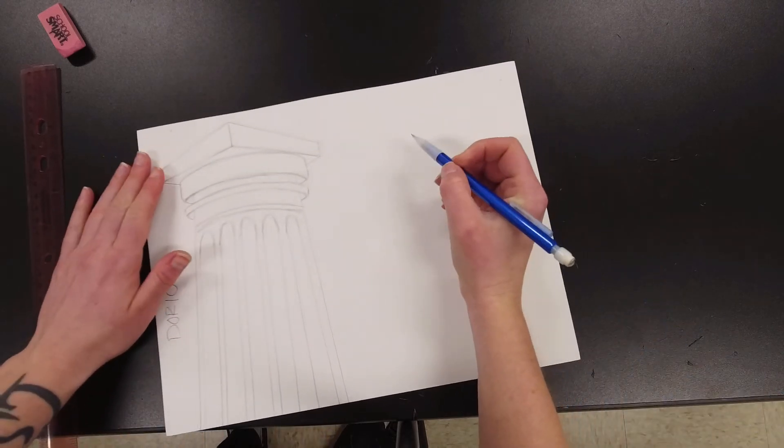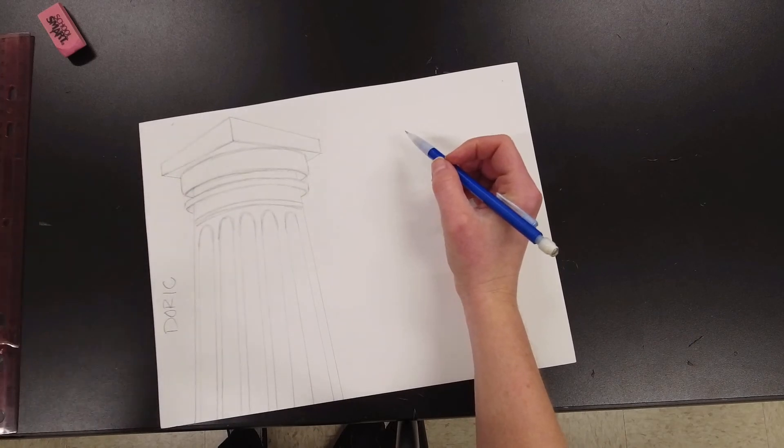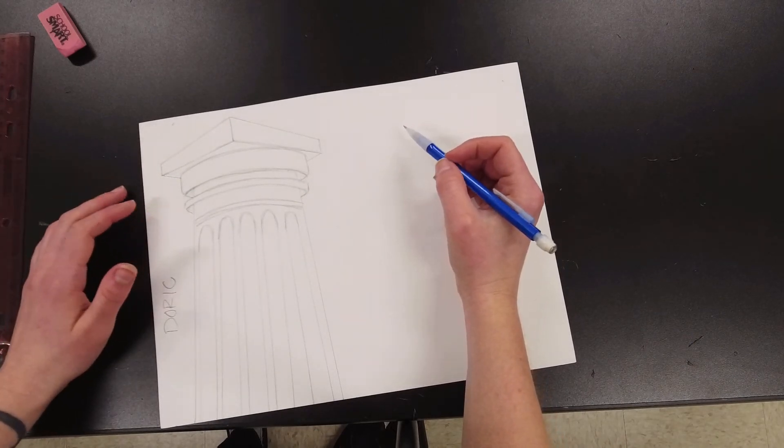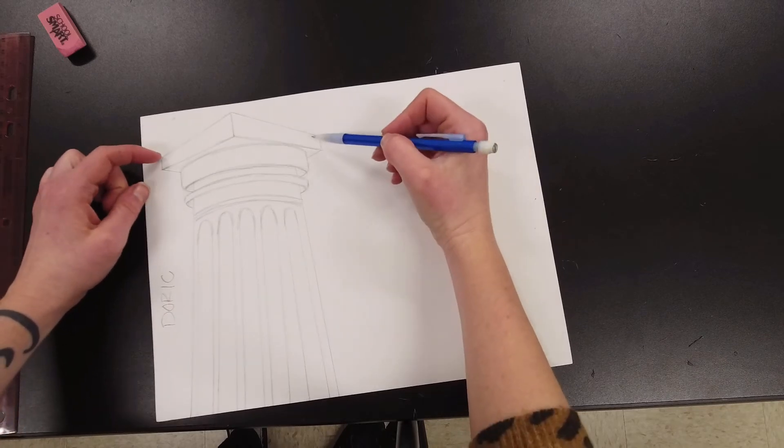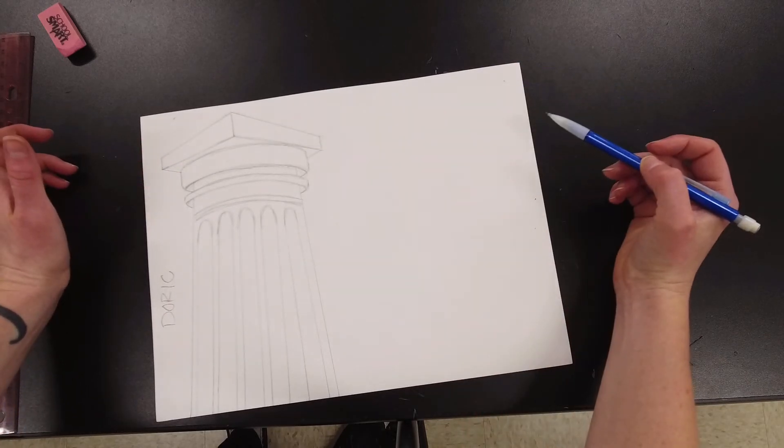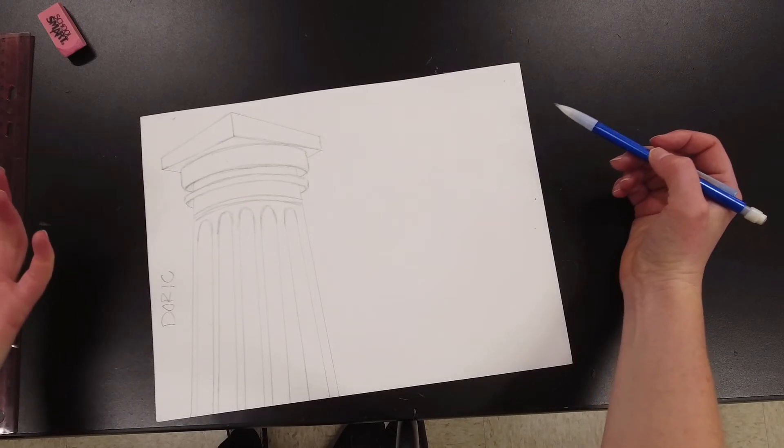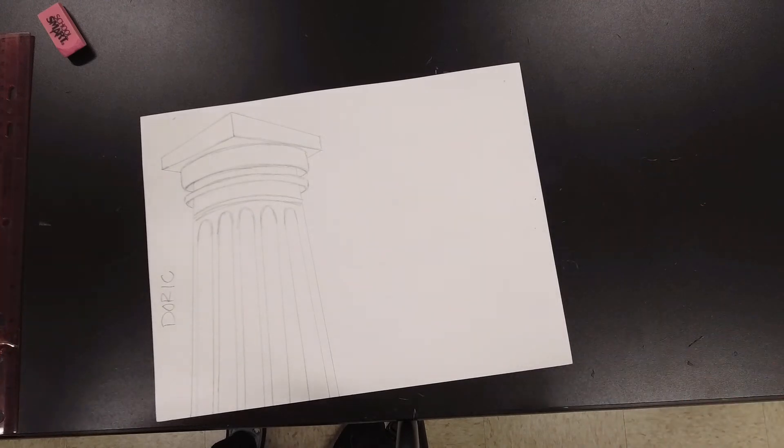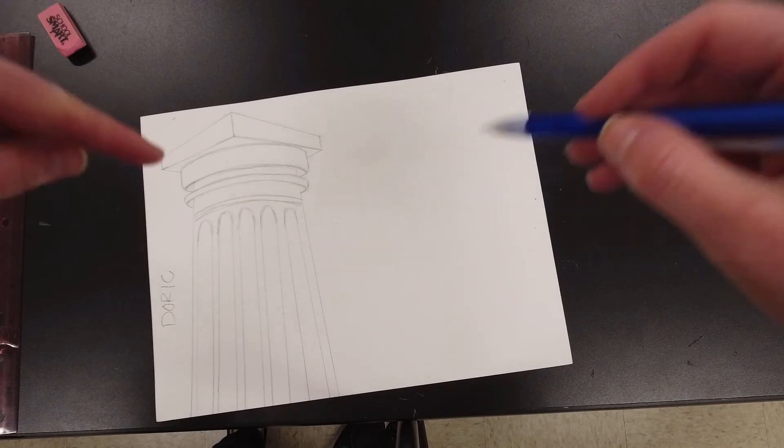And then on this side I'm going to start on an ionic example. The ionic examples can start several different ways. But the main thing is I want to make sure that my ionic one had those sort of little round curls.